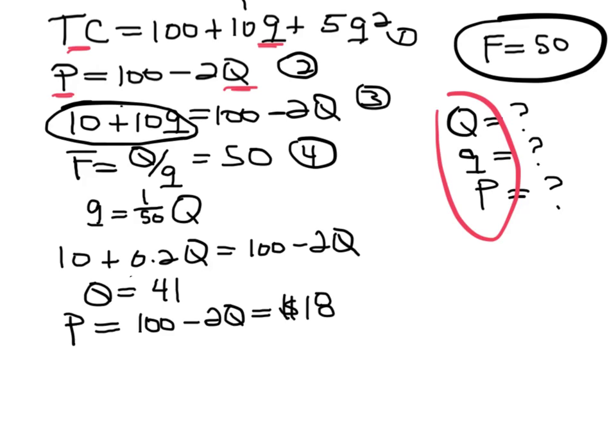So we found what we set out to do, and we can also find small q. Small q is going to be equal to 1/50 times 41, which is going to be equal to 0.8.